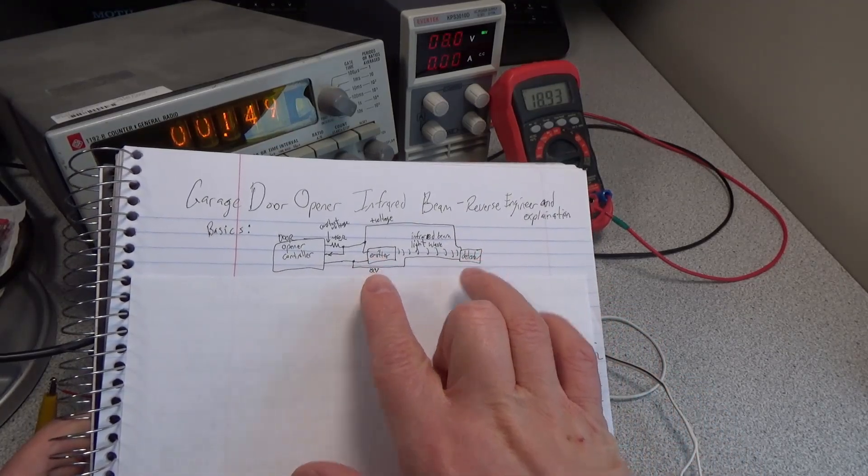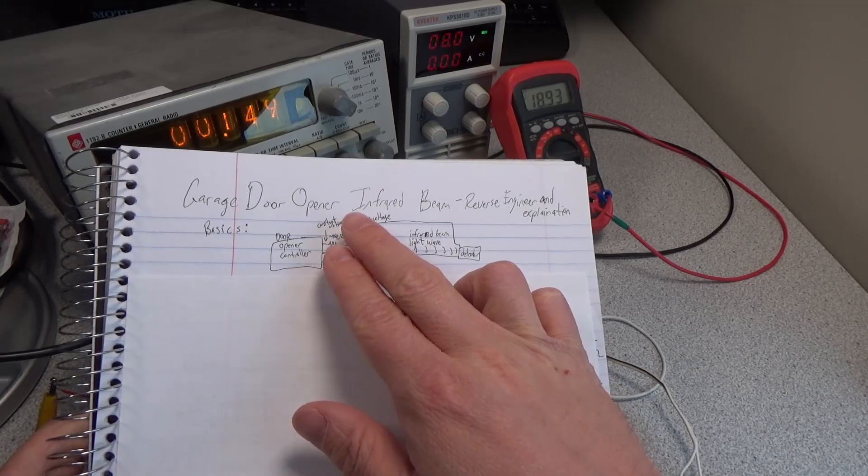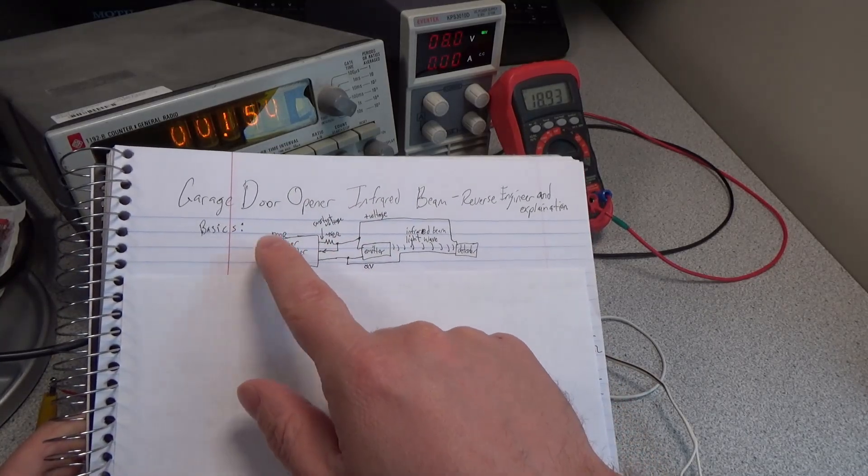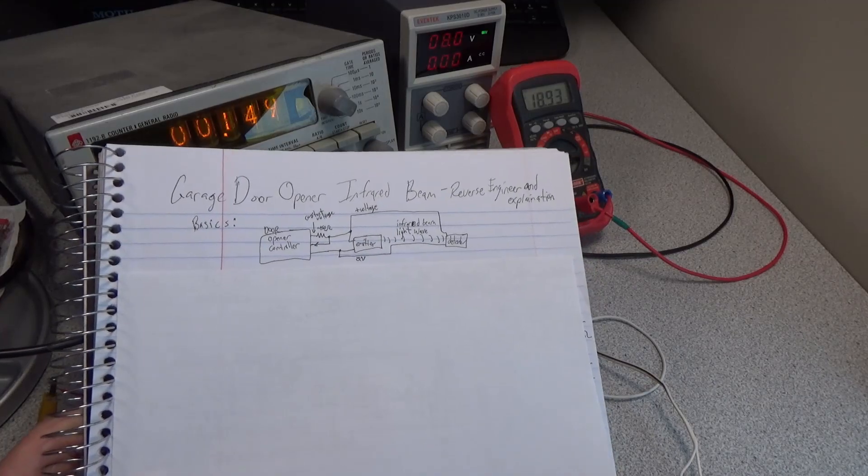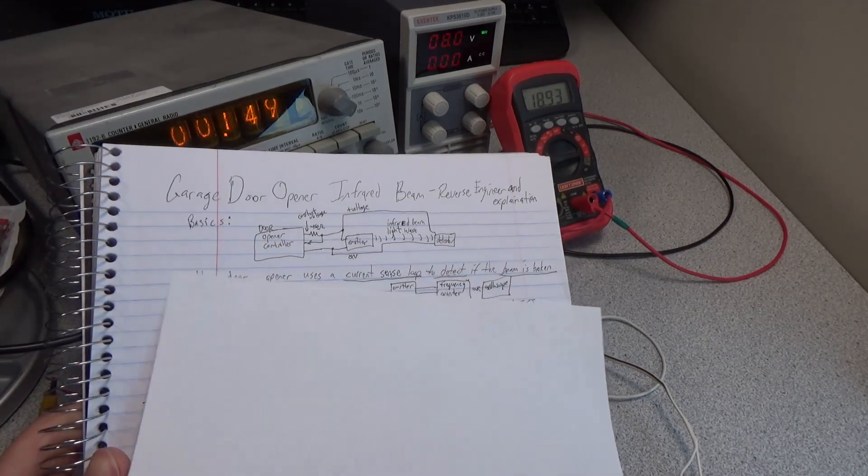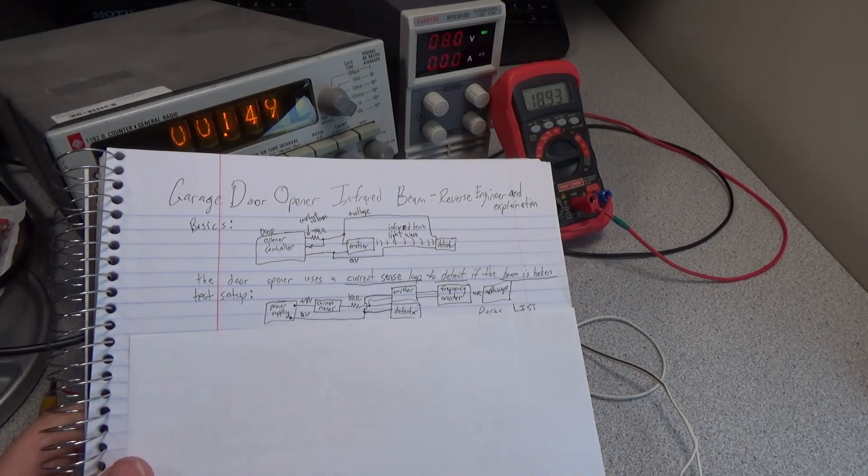The detector on the other side picks up that beam. As long as it detects it, the current stays higher, which tells the system it's happy and can open and close without issues.